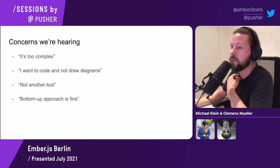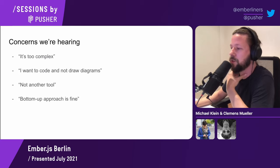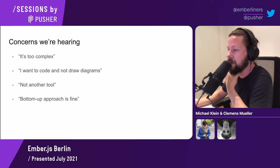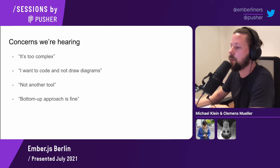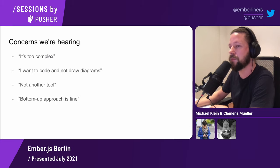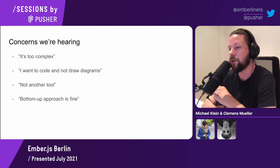Another concern we hear is that folks don't want to draw diagrams — they want to code. To us, this is an issue of development being only a part of engineering. Thinking about the system before it is code helps with understanding the system and getting a better answer to the question of what it is we're actually building. Also, as Michael pointed out in the beginning, you can use state charts programmatically. A state chart describing the behavior can be used directly in code — but this is not the scope of this talk.